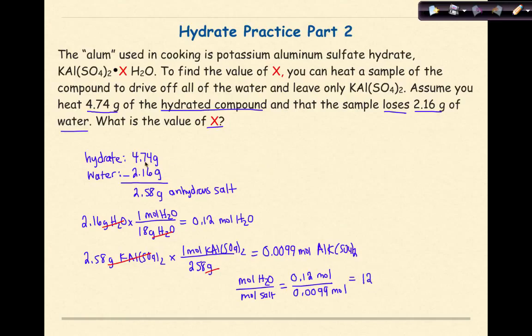So the final formula for this particular hydrated salt is KAl(SO4)2·12H2O. This X right here is represented by the 12 that we calculated.